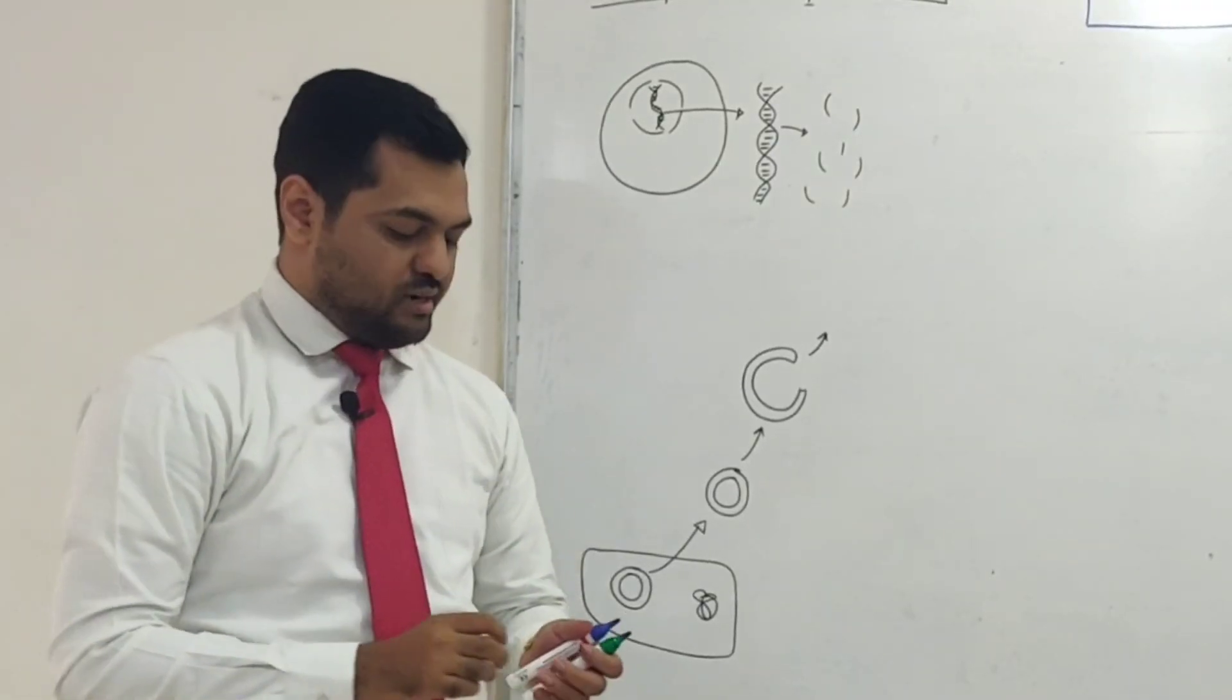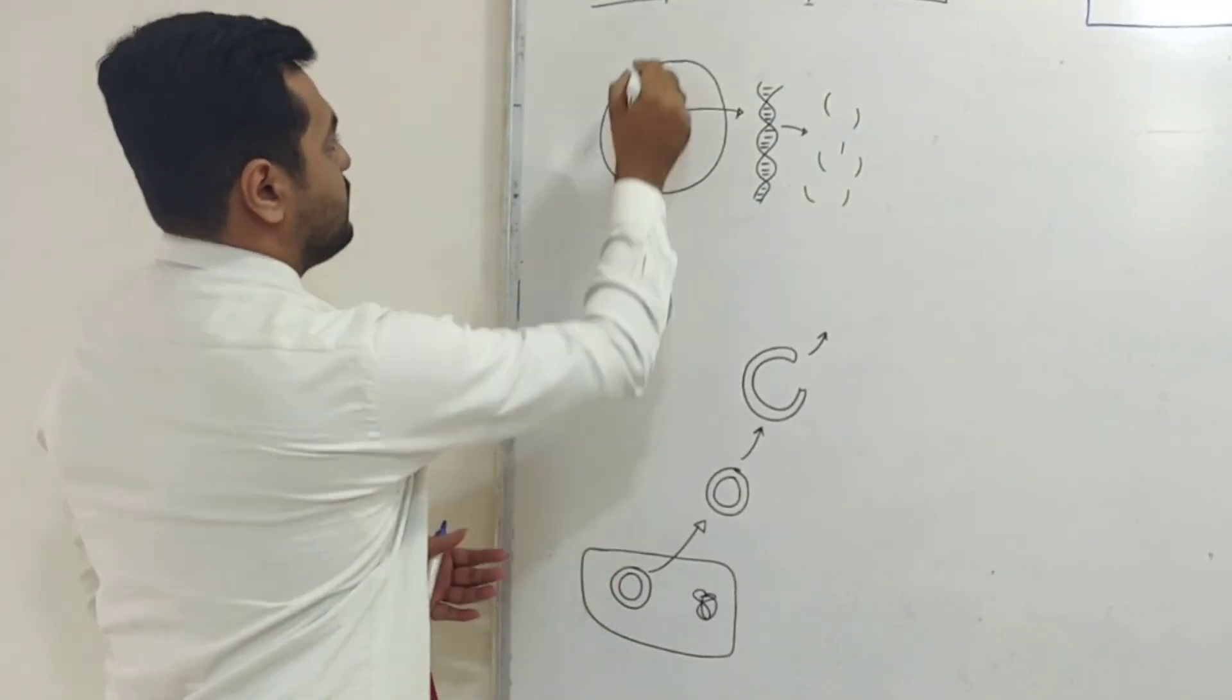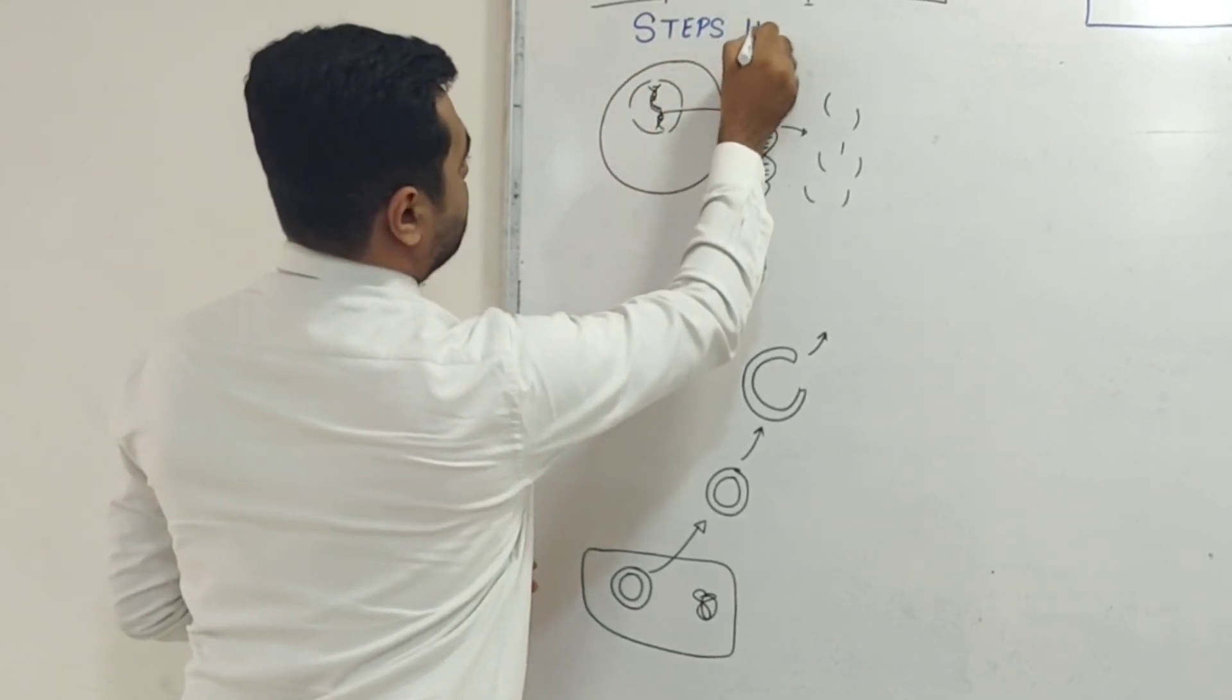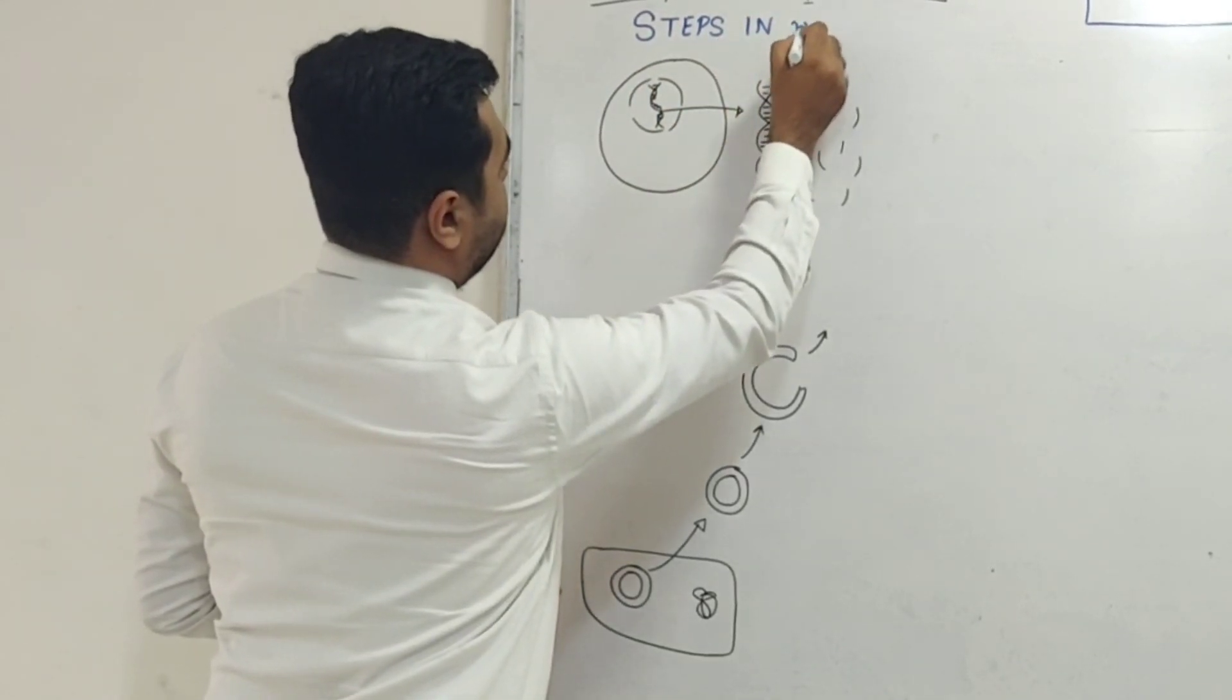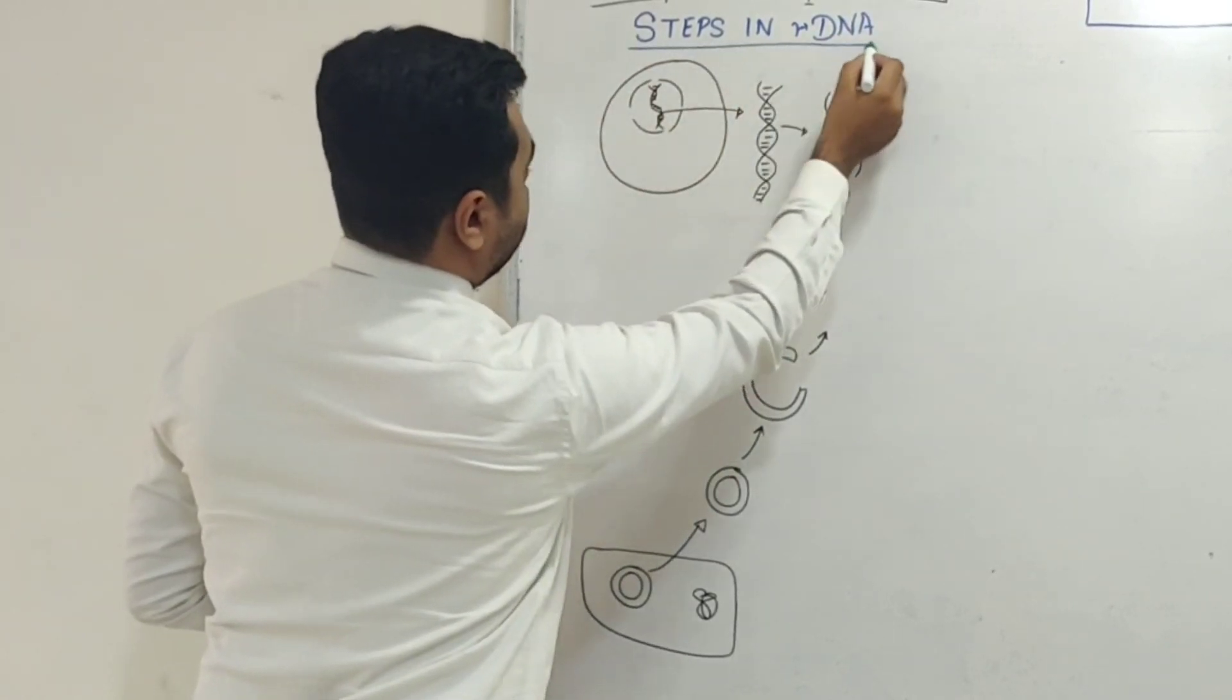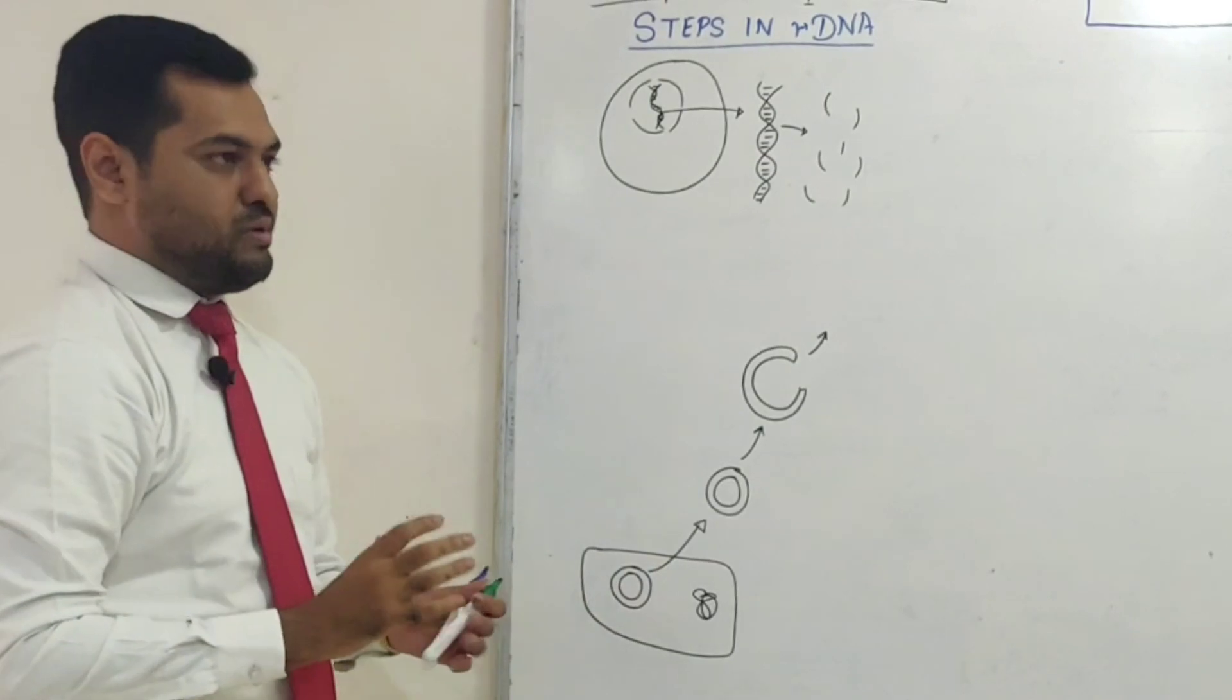So next what we are discussing is the steps which are involved in the process of rDNA technology. To rDNA banane ke liye there are various steps. First, we take a cell which has our desired gene.